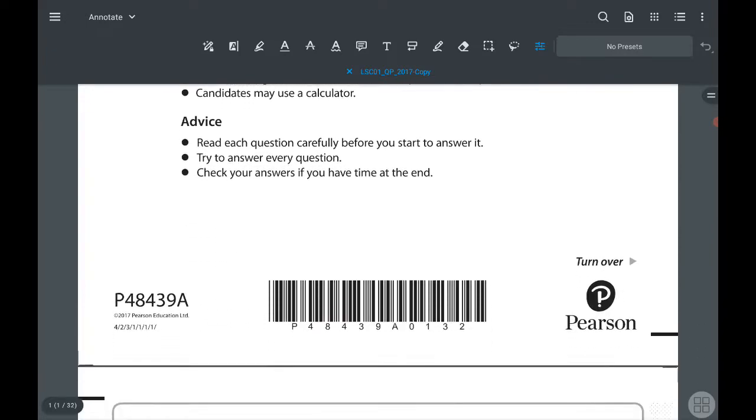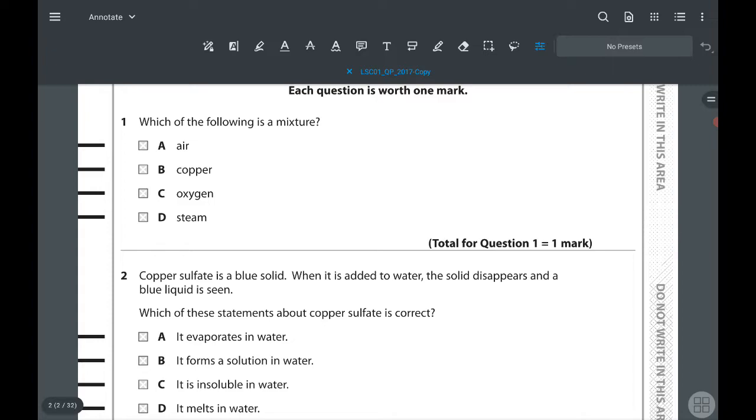Let's look at the first question. Which of the following is a mixture? The answers given are air, copper, oxygen, and steam. Copper is an element, oxygen is also an element, and steam is water in gas form - H2O with a chemical bond between hydrogen and oxygen. So the only mixture we have is air.